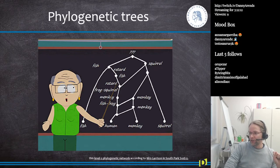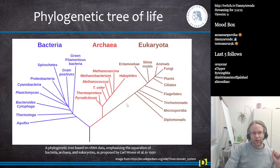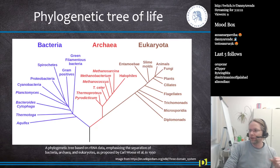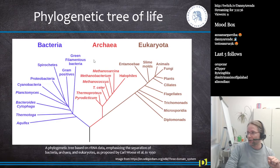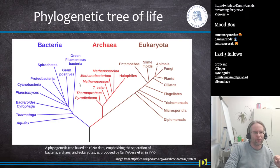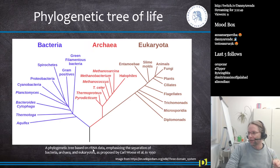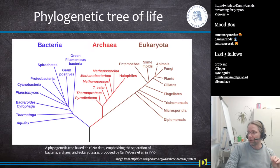Phylogenetic trees is going to be the next topic. We all know that life on earth started from a single origin and then diverged into different clades, which we now call bacteria, archaea, and eukaryota — so multicellular organisms, bacteria, and archaea which are the extremophiles living near warm water sources on the bottom of the oceans. This is based on ribosomal RNA data.